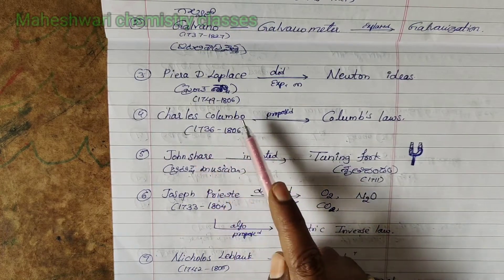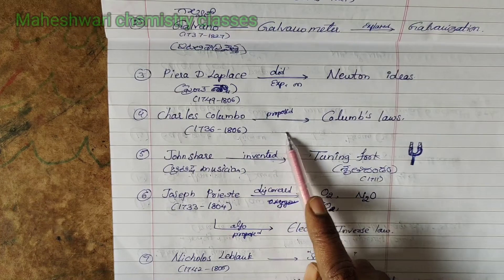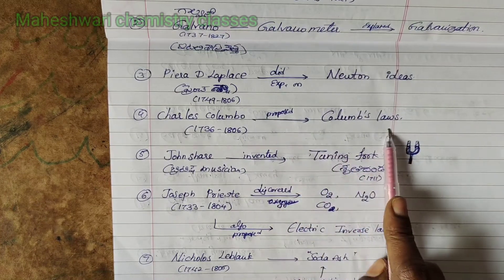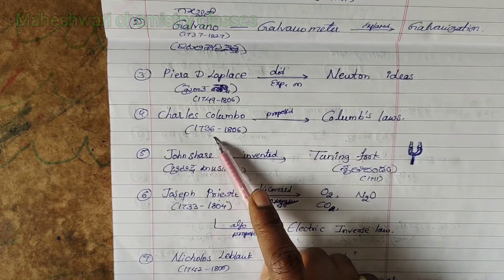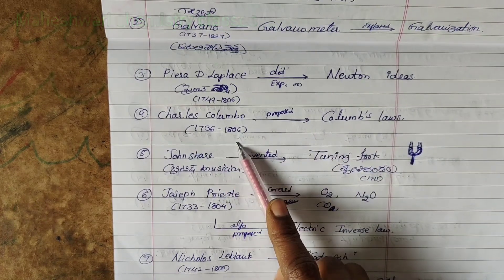Charles Coulomb proposed Coulomb's law. Time duration: 1736 to 1806.